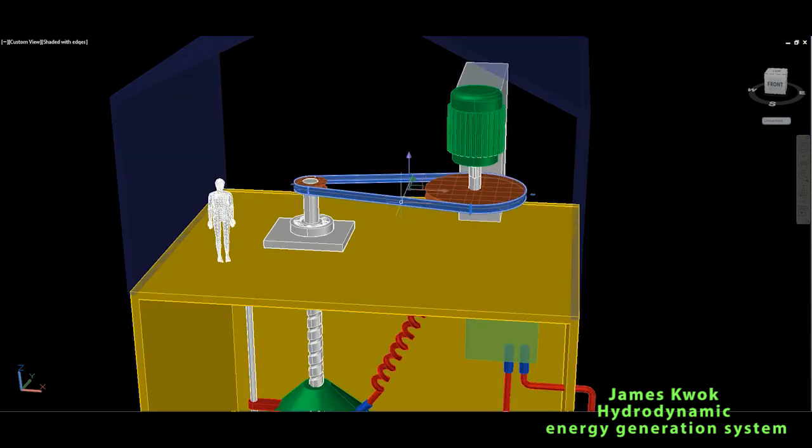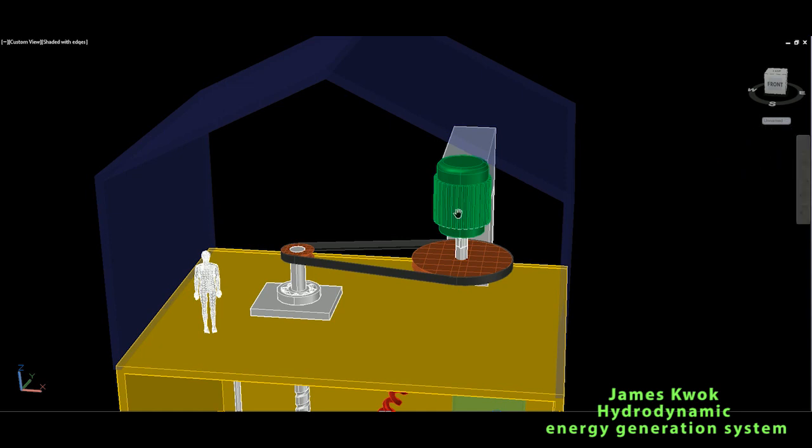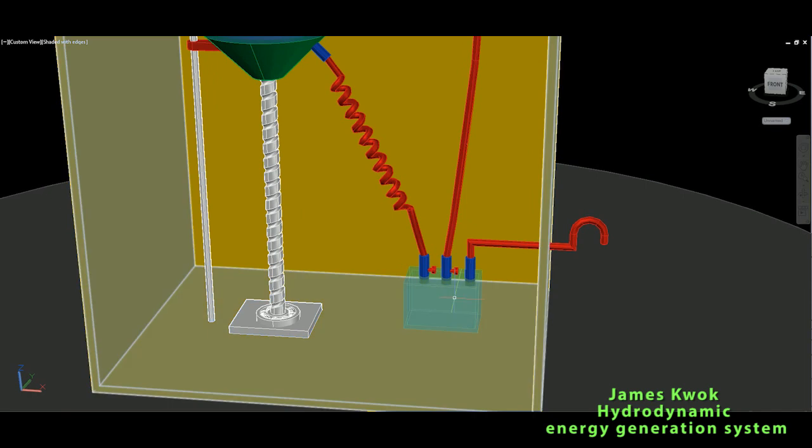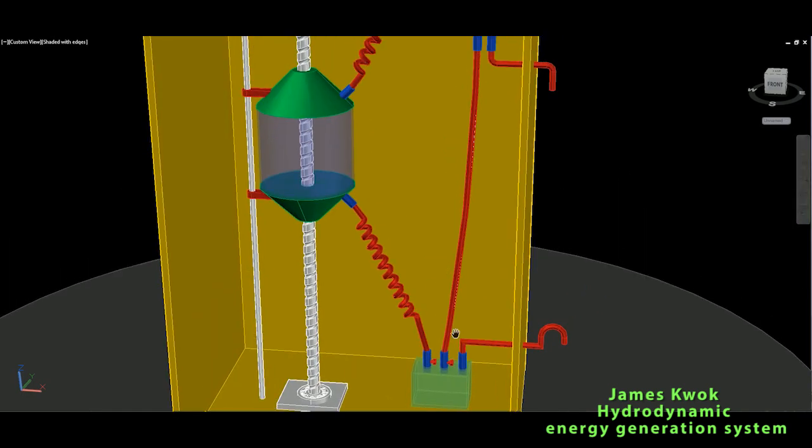He mentions in the patent that it's better to use a flywheel system to extract more energy out of this. On the top, on this roof, he proposes to use some solar panels which are necessary to have some excess energy which will help to pump the air from this bottom air reservoir into this buoy.